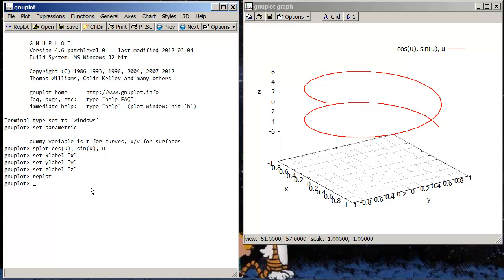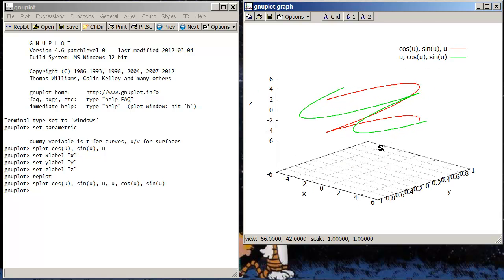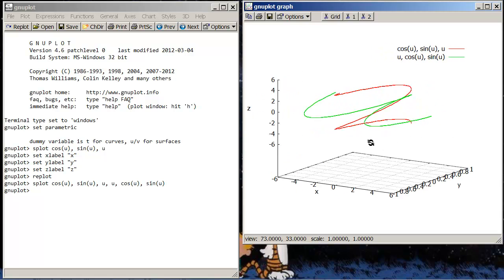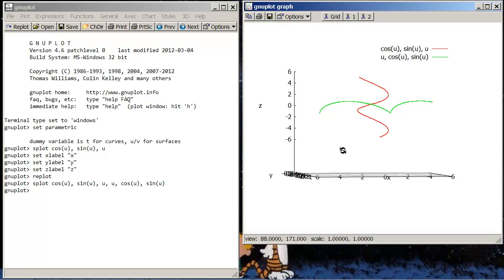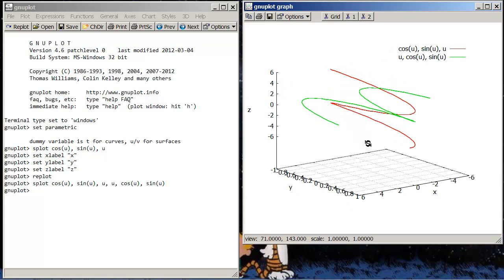So let's do more than one plot. Let's press the up key so we don't have to retype it. And then let's try, say, U, cosine of U, sine of U. Now notice that in red, I have cosine U, sine U, and U. In green, I have U, cosine U, and sine U. And they're both on the same axes, and you can see that they look pretty nifty, actually, I think.